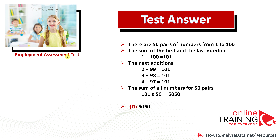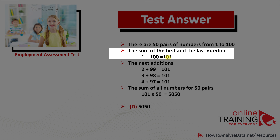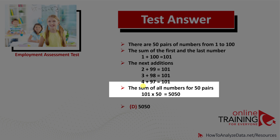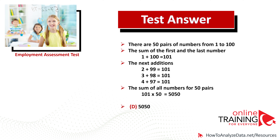You'll get to the correct solution much faster if you realize that there are 50 pairs of numbers, and the sum of the first and last number of each pair equals 101. For example, 1 plus 100 is 101. The same is true for 2 plus 99, 3 plus 98, 4 plus 97, and so on. There are 50 pairs and the sum of each pair is 101, so the correct answer is 5,050.